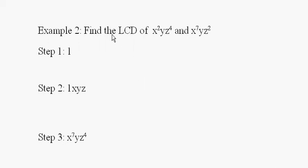In example two, we're going to find the lowest common denominator, as though these were denominators, or the least common multiple of these two terms. We look at the coefficients and see that it's one, so our step one the lowest common denominator of the two numerical coefficients is one.